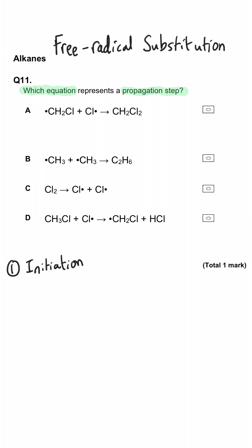There is initiation, where one molecule is split apart using UV light in homolytic fission to give two free radical products. And that is in C, in this case, so that's why C is wrong.